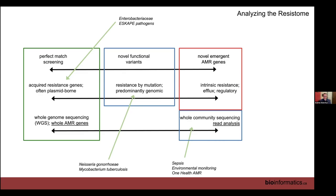Whole community metagenomics used to be in the 'red' category but has improved enormously due to fantastic community work — good progress on sepsis, wastewater, environmental AMR, and agricultural samples. Years ago when this course started, metagenomics was very challenging; it has since moved from red to blue thanks to significant community effort.